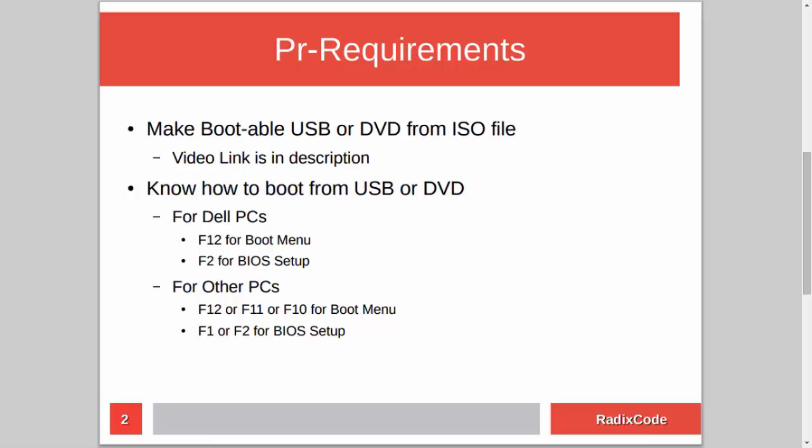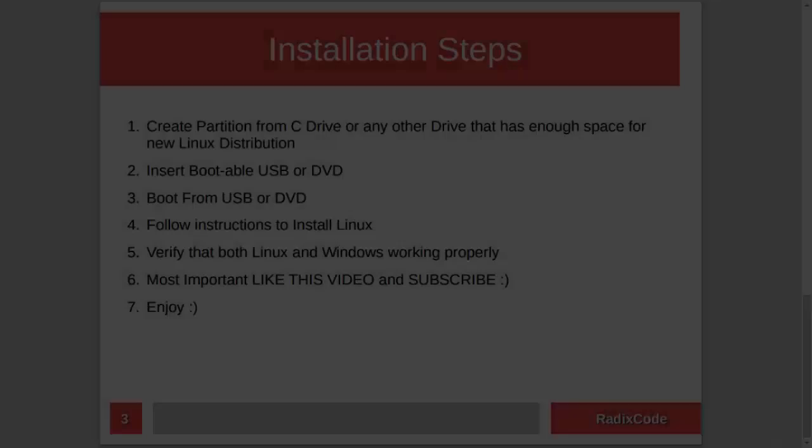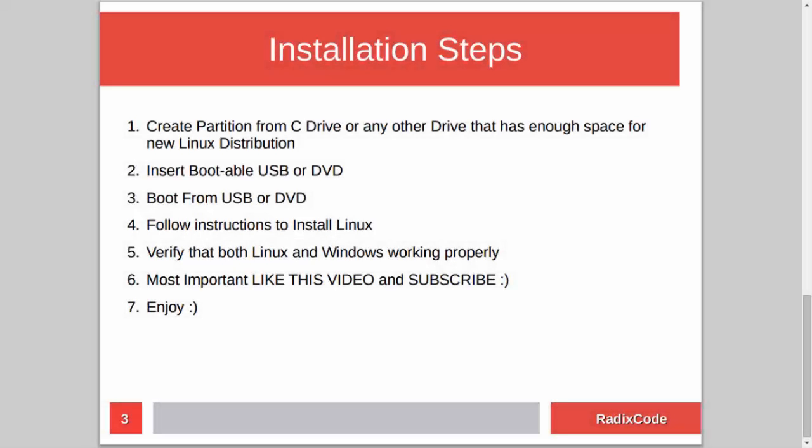The installation steps are very simple. First, we need to create an empty partition for our Linux distribution from the C drive or any other drive that has enough space. After this, we will insert our DVD or USB drive into the computer and restart. Then we will boot from the USB or DVD drive and install our Linux distribution. At the end, we will verify that both Linux and Windows are working fine.